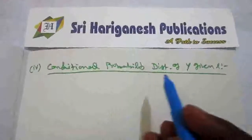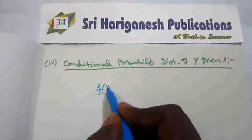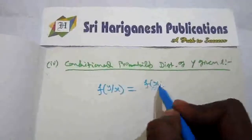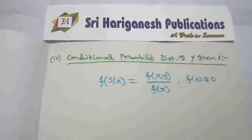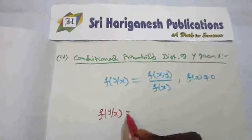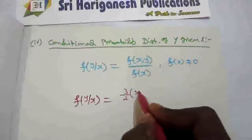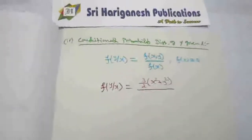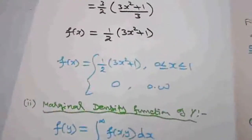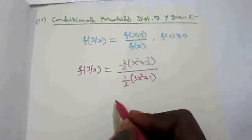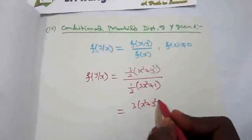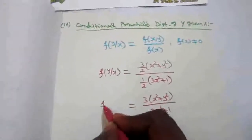Finally, I find the conditional probability distribution of y given x. The formula is f(y|x) = f(x, y) / f(x), provided f(x) ≠ 0. Substituting: f(x, y) = (3/2)(x² + y²) and f(x) = (1/2)(3x² + 1). The 1/2 terms cancel, giving f(y|x) = 3(x² + y²) / (3x² + 1).